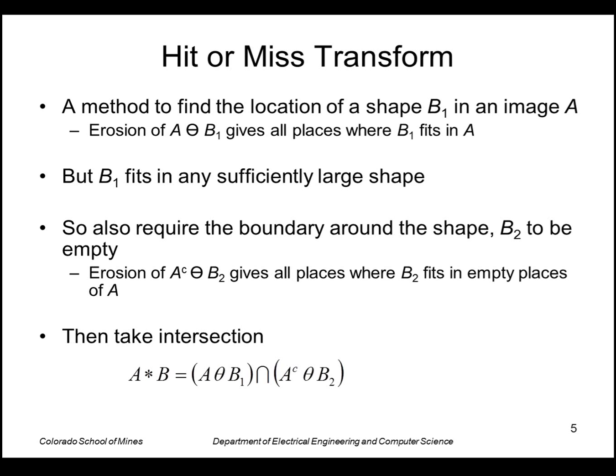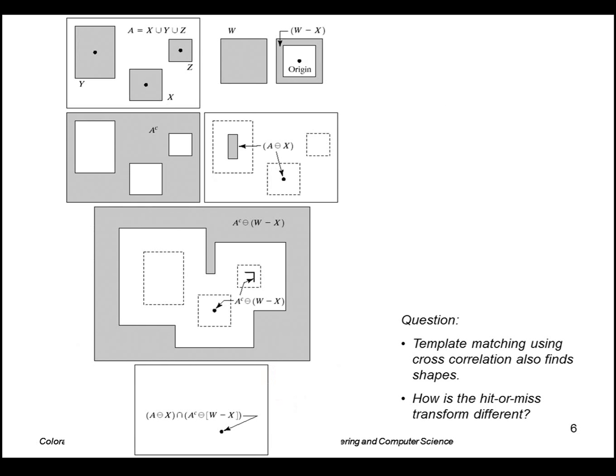We want both of those locations: the places where B1 fits in A and the location where B2 fits in the complement of A. Here's an example. Here's an image set A consisting of these three distinct places, and let's say we want to look for shape X in this image. We first find the erosion of A by X. The locations where X fits entirely within A is the single point here and a whole bunch of places here because that region is pretty large.